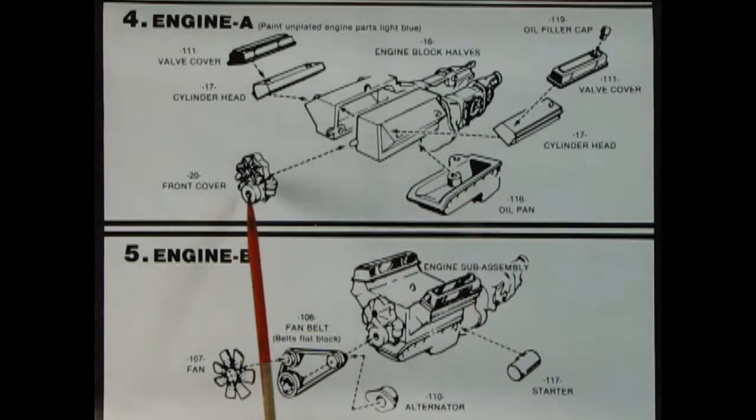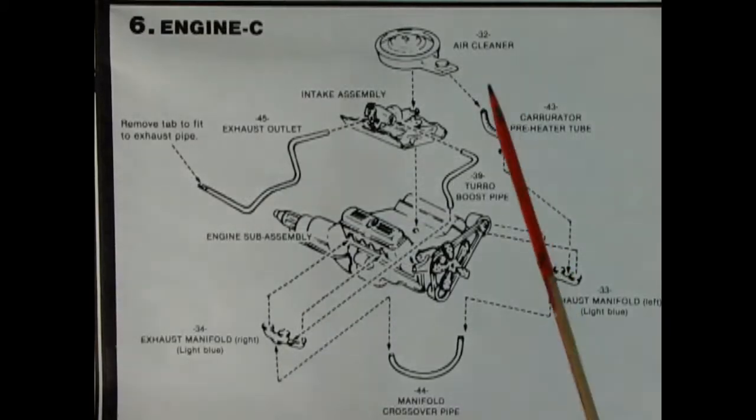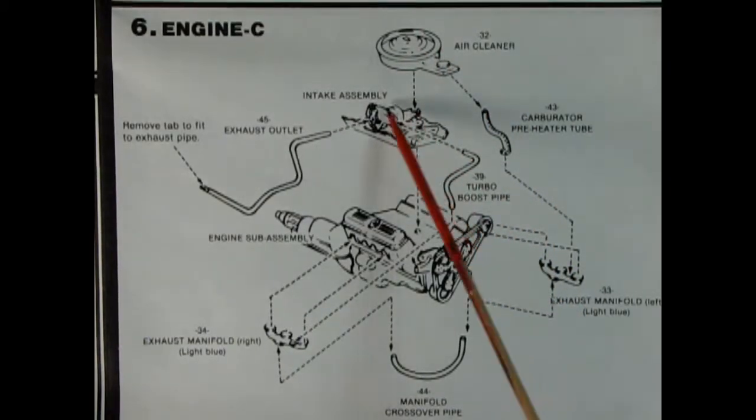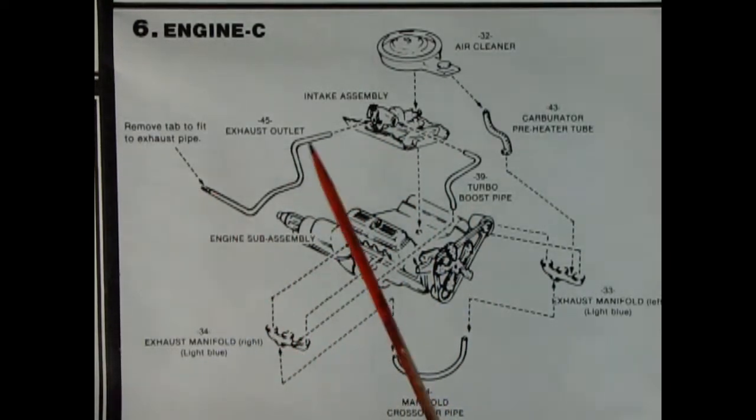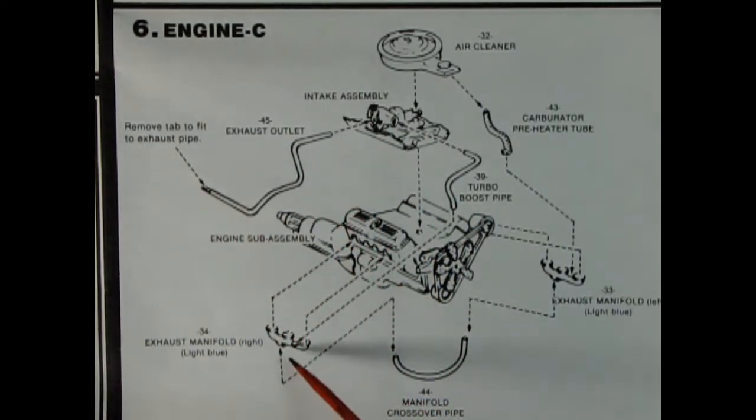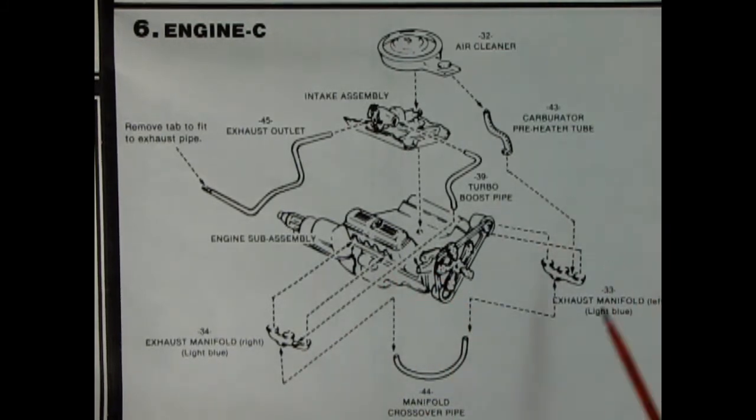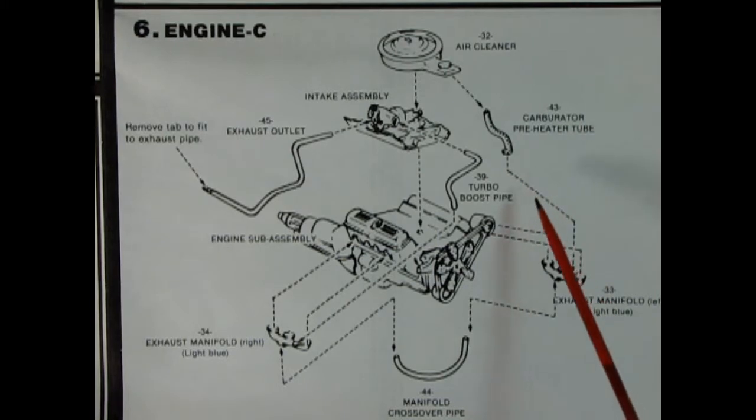Then if we look at engine assembly five which is B, then we've got our starter going on the side, our alternator, our fan belt and our fan. Panel six shows the air cleaner going on to that intake manifold, and then we've got this exhaust outlet that goes to the exhaust pipe. There's our exhaust manifold there as well as one here, and we've got a carburetor preheater tube and a turbo boost pipe and then this crossover manifold.